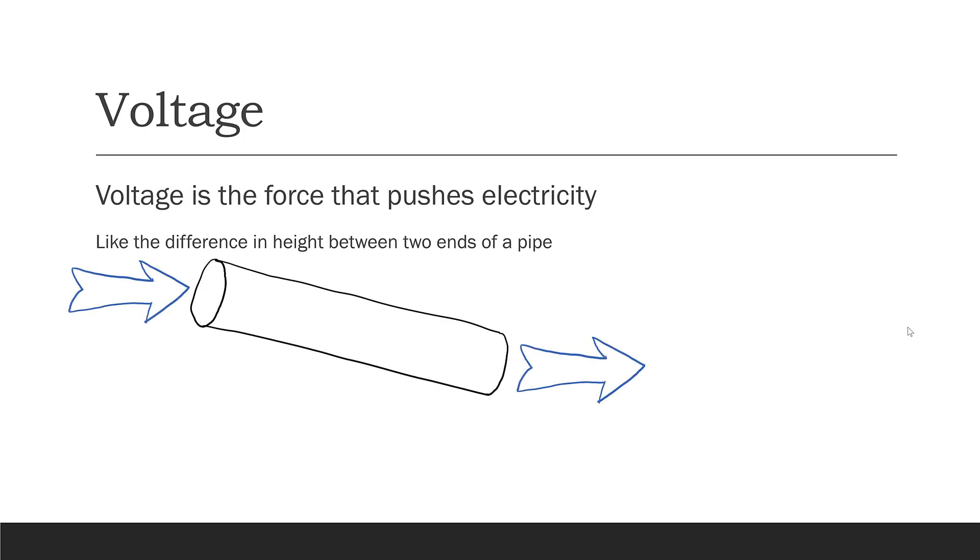Now let's talk about voltage. Voltage is the force that pushes electricity. Again, imagine that water flowing through a pipe is kind of like electricity flowing through a wire. One of the things that makes water move through a pipe is if one side of the pipe is higher than the other side. Imagine you have a pipe like this. Voltage would be kind of like the difference in the height of the two ends of the pipe.